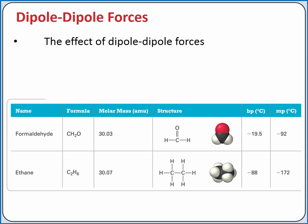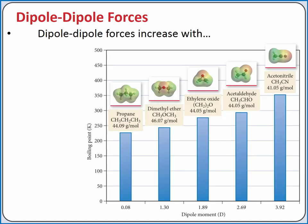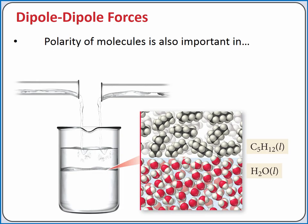Formaldehyde and ethane have similar molar masses, but formaldehyde is a polar molecule, so there are dipole-dipole forces. These additional intermolecular forces contribute toward the higher boiling points and melting points of formaldehyde compared to ethane. Dipole-dipole forces increase with increasing strength of the dipole moment. For this series of compounds with similar molar masses, we can see the increasing boiling points with increasing dipole moment.